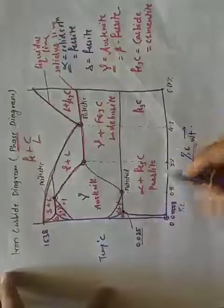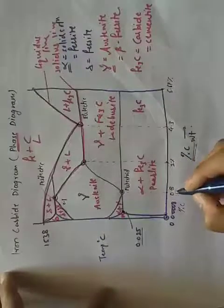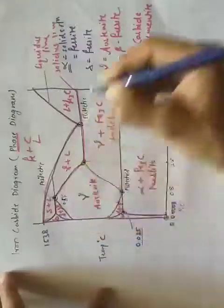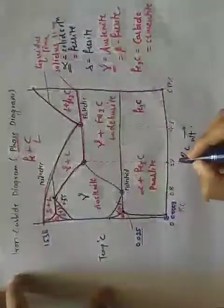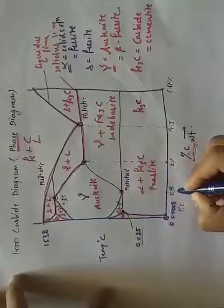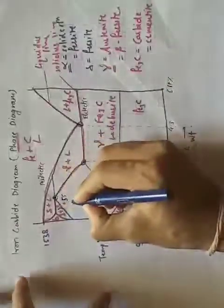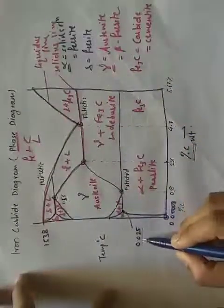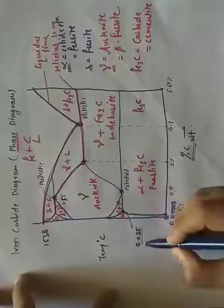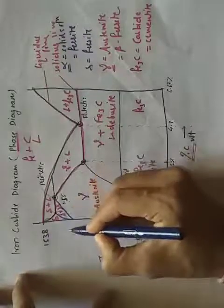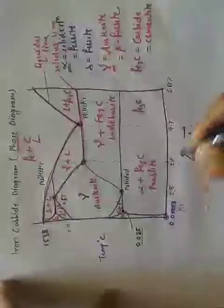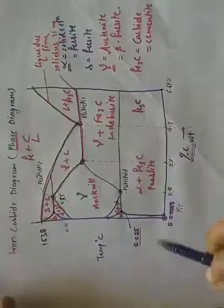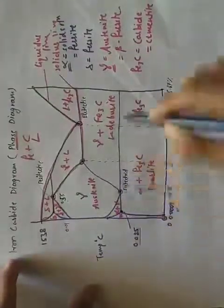So the key percentages to remember: the eutectoid point is around 0.8% carbon, the eutectic point is at 4.3%, and the peritectic point is at 0.1%. Maximum solubility of carbon in alpha is 0.025%, in delta is 0.01%, and in austenite is 2.0%.